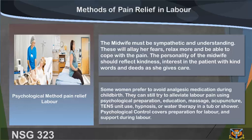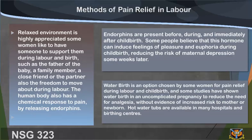Some women prefer to avoid analgesic medication during childbirth. They can still try to alleviate labor pain using psychological preparation, education, massage, acupuncture, TENS unit use, hypnosis, or water therapy in a tub or shower. Psychological control covers preparation for labor and support during labor. A relaxed environment is highly appreciated. Some women like to have someone to support them during labor and birth, such as the father of the baby, a family member, a close friend, or a partner, as well as the freedom to move about during labor.